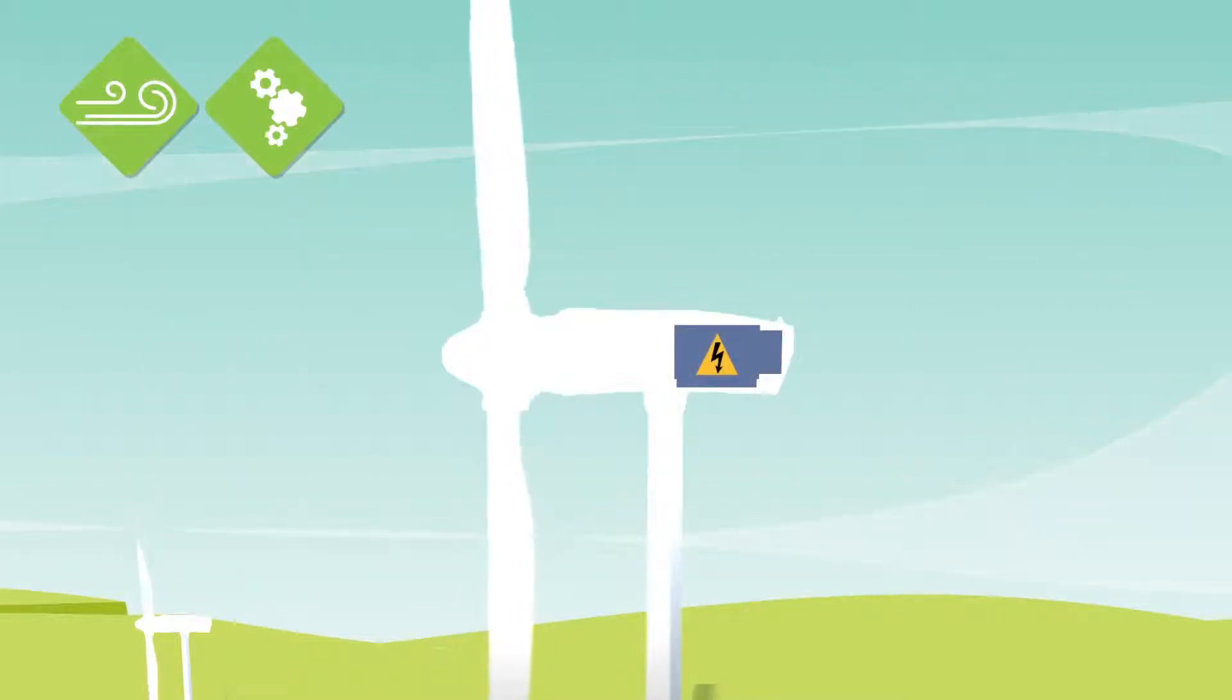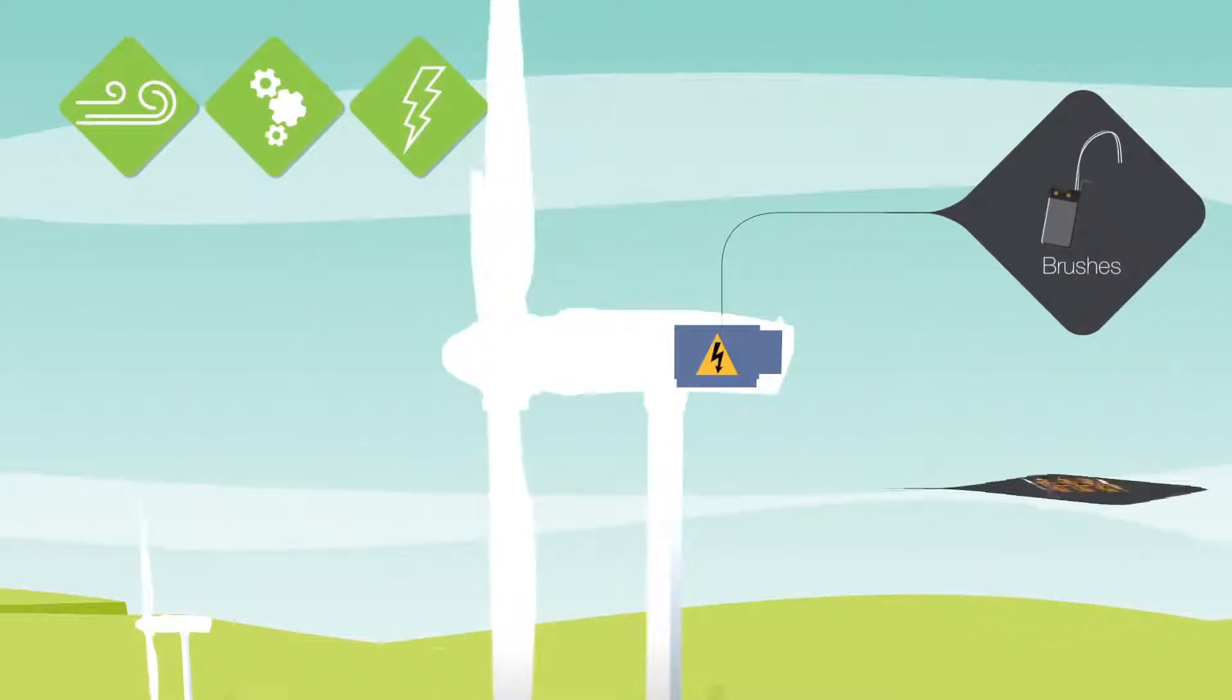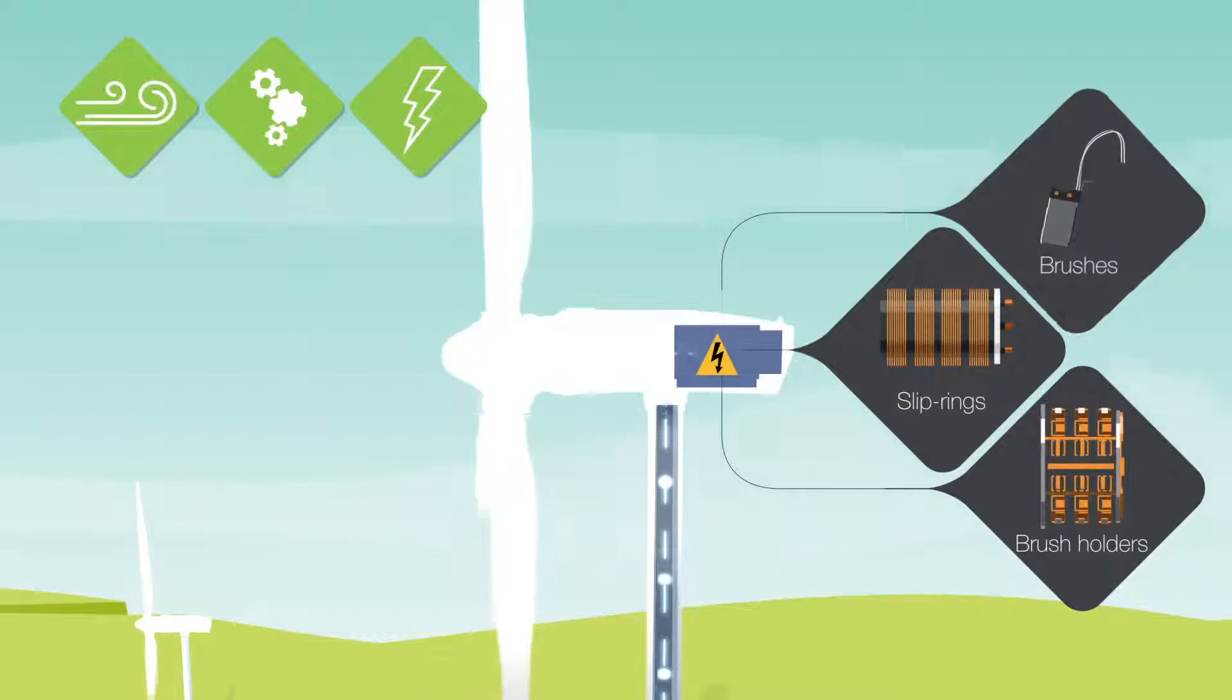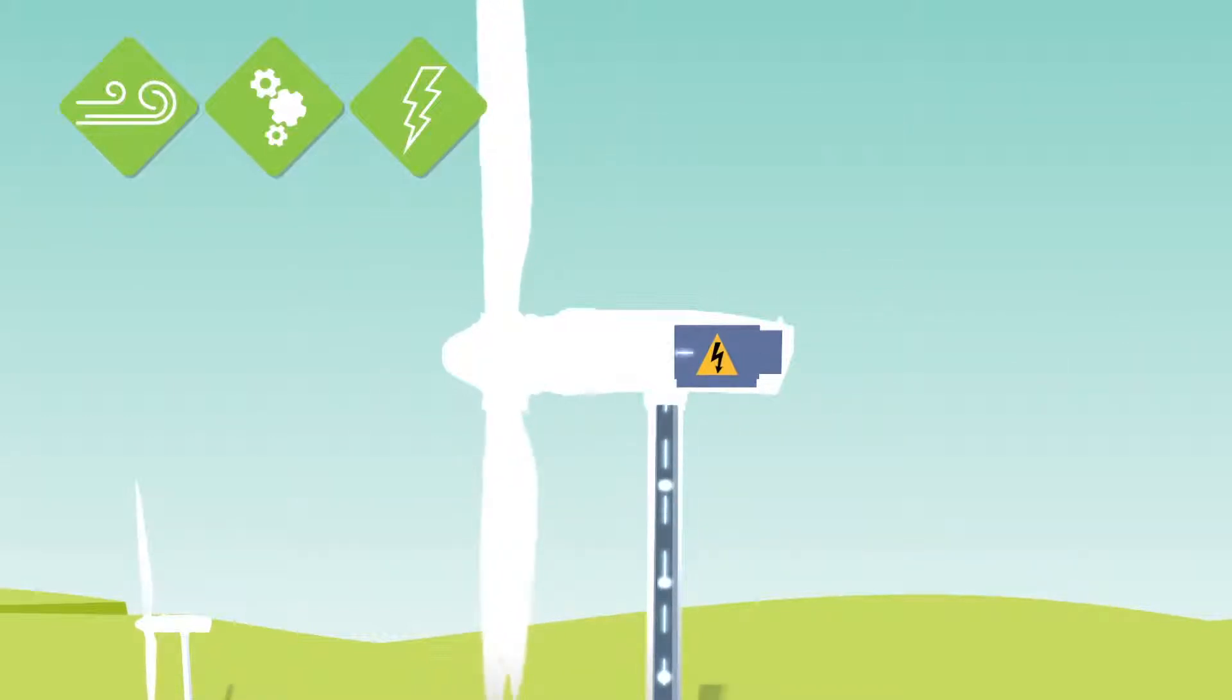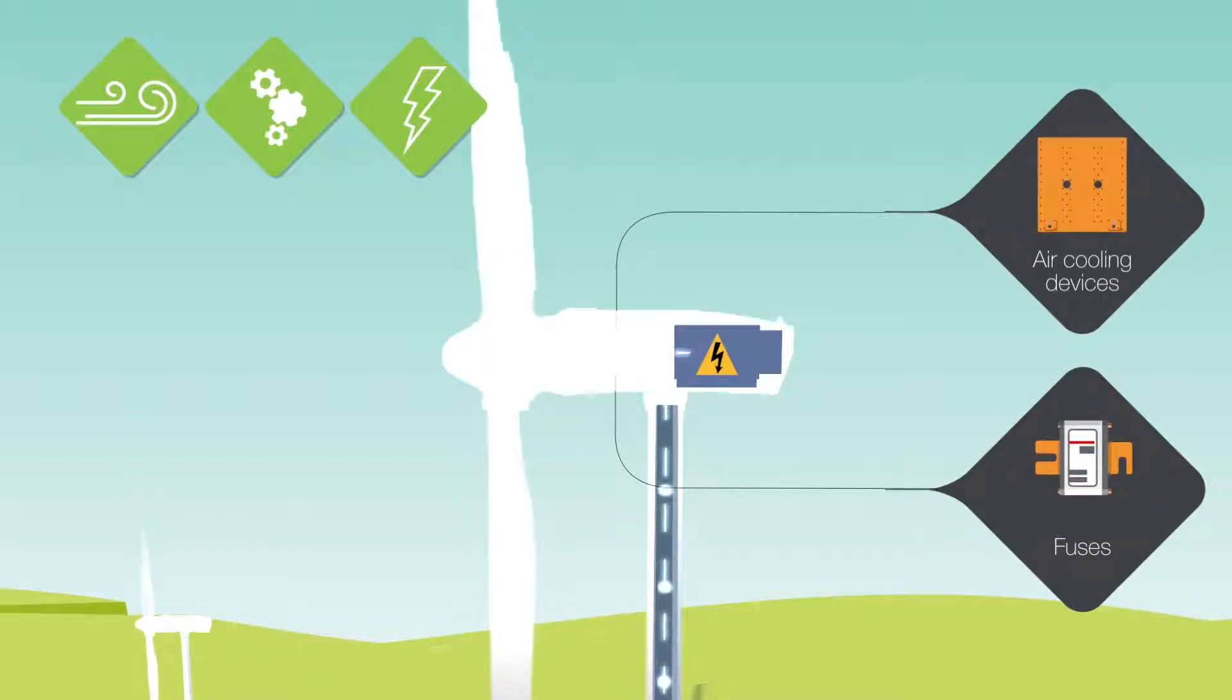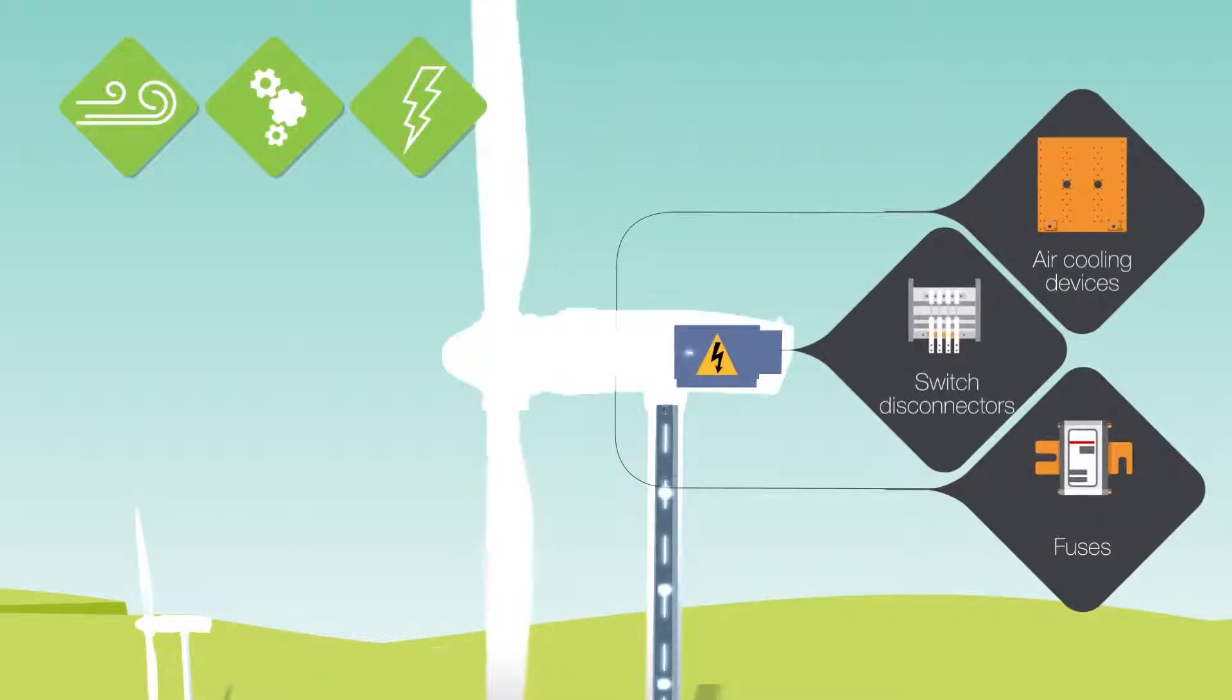The generator converts the mechanical energy from the turbine into electrical energy. Mersen provides the brushes, brush holders and slip ring assemblies that transmit electrical current through the generator to the external circuit. The group also supplies a full series of electrical protection solutions to keep the generator from overheating and to protect the electrical and electronic components housed in the electrical enclosure connected to the nacelle.